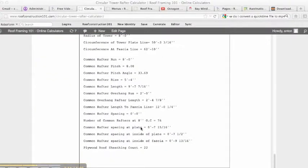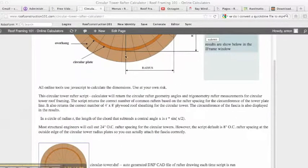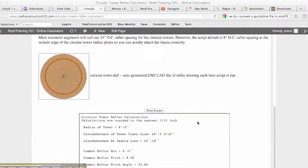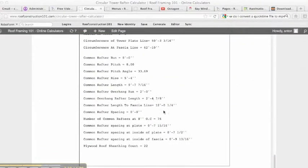And common rafter spacing at the plate. It tells us that, so if we were to lay everything out at 8 inches when we got to the end of where we would start. So let's say if we started here and we went all the way around, by the time we got here, we wouldn't have 8 inches anymore. We would have an off measurement. But if we go through and we make it 7 inches and 15/16ths, for this particular one, then they're all going to be equal.